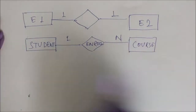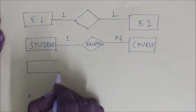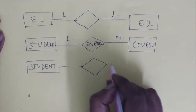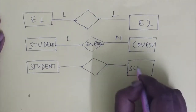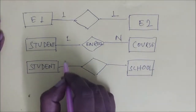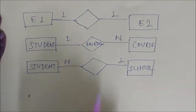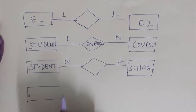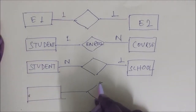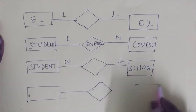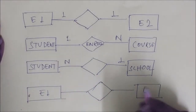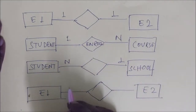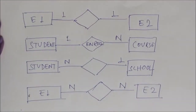Another thing is many-to-one relationship. For example, student related with a school — there may be n number of students in one school. In the same way, there may be a many-to-many relationship, where multiple entity ones are related with multiple entity twos and vice versa.